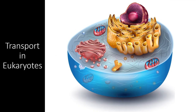Food vacuoles are just one small example of the many different active and passive transport processes that take place in a eukaryotic cell. They are also essential for creating ATP energy, maintaining the cell's water balance, and many other processes.